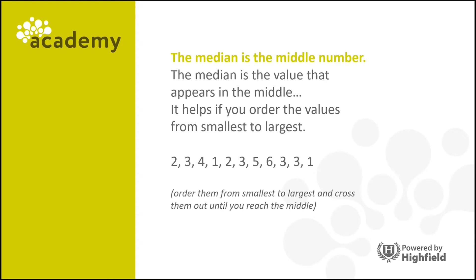So as I've said, it helps you to order the values from smallest to largest. Now here's a set of data, and if we reorder them from lowest to highest, this is what we have. Now the middle value is a number 3. So 3 is the median.